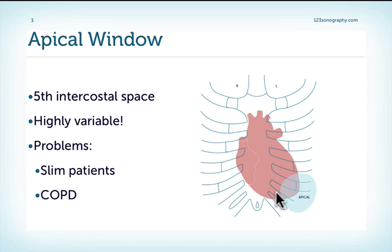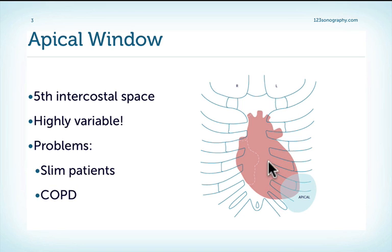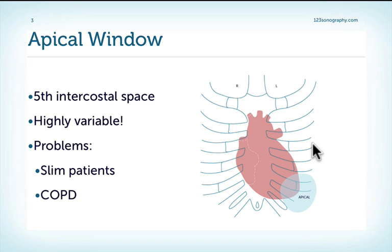Special problems we have is in very slim patients, where the apical window is sometimes not visible at all, simply because the axis of the heart is so steep that the whole heart is hidden behind the sternum. Another problem is patients who have COPD, where we have lung tissue which obscures the apical window.